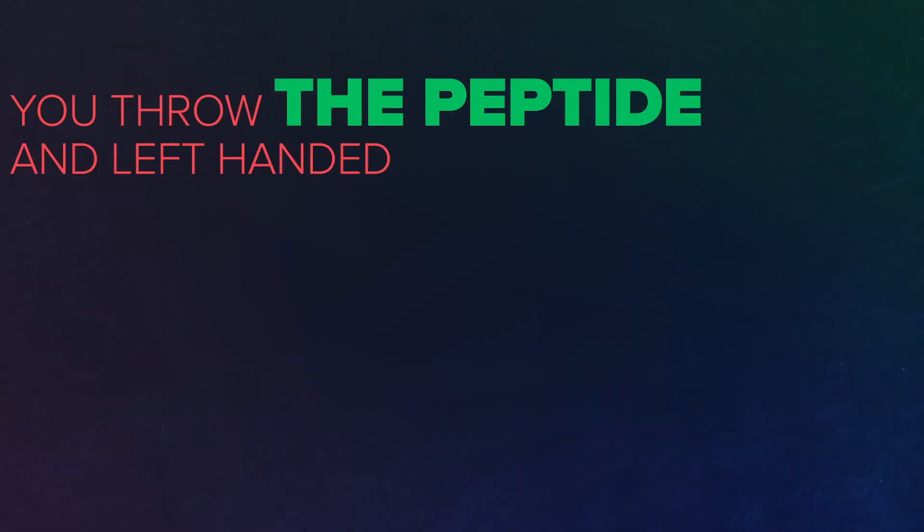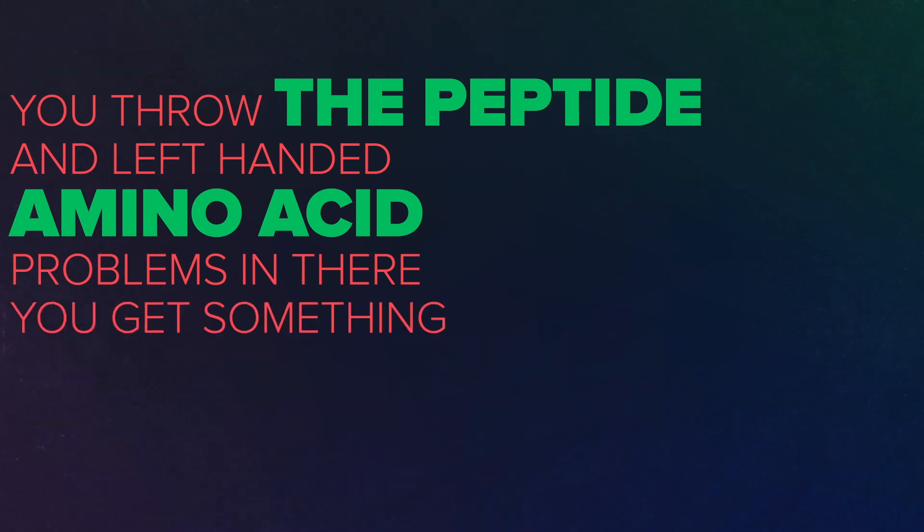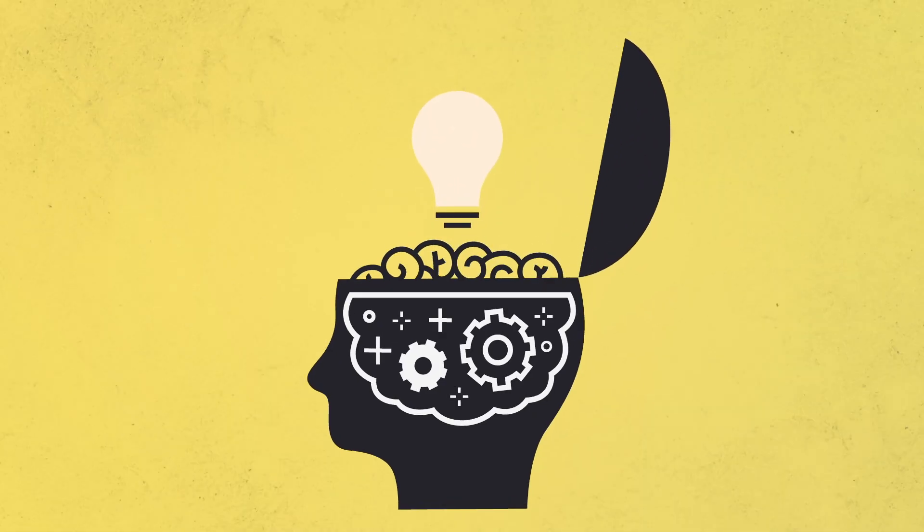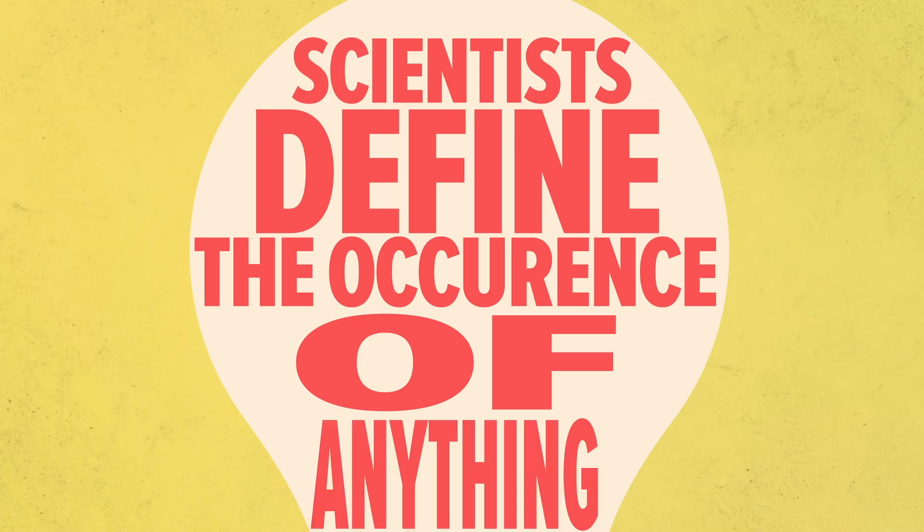Now, you throw the peptide and the left-handed amino acid problems in there, you get something close to 10 to the 164th. Keep in mind that scientists define the occurrence of anything with less than 1 in 10 to the 50th as absurd.